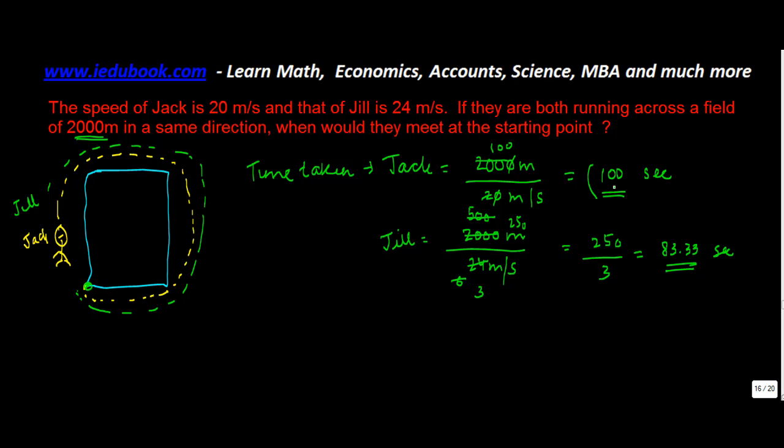Now, basically, this is one number x, this is one number y. We need to find out the time at which both of them are going to meet. So that time is going to be nothing but the least common multiple of 100 and 83.33 seconds. Why? Because that's the point where both of these things will meet.